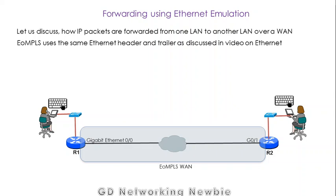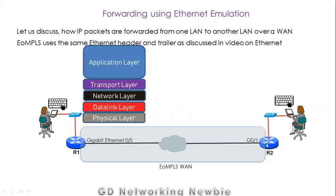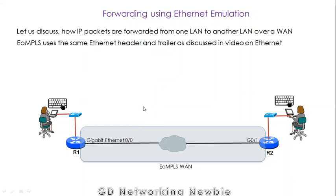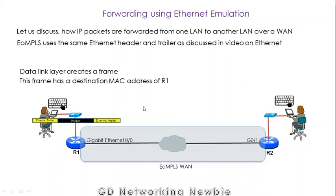For example, in this situation we have a user connected with router R1 and router R2. The user interacts with an application, which generates data. The application layer hands that data down to the network layer, and the network layer hands it to the data link layer. The data link layer takes the packet and adds an Ethernet header and Ethernet trailer. This frame has the MAC address of R1, since this user is connected to that router.